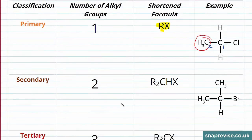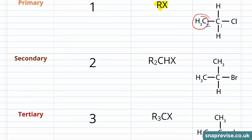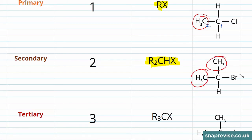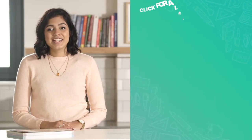Moving on to our secondary haloalkanes. In our secondary haloalkanes we have two alkyl groups attached to that carbon, so the general formula is R2CHX. We have an example of a secondary haloalkane here — we can see we have those one, two alkyl groups. This is a bromoalkane as bromine is the halogen atom bonded to our carbon. The longest carbon chain in this molecule is three carbons long.